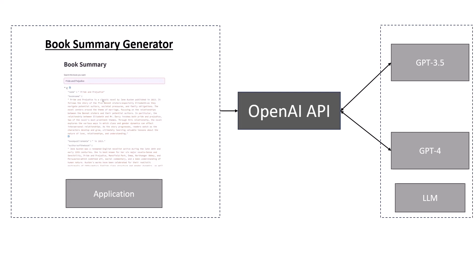GPT 3.5 and GPT 4 are large language models and they can provide the summary of a book — I just provide the name of the book and they give me the summary. So I want to design a book summary generator application, a Streamlit app where I write the name of the book and the application provides me the summary, helping me decide whether I should read that book.